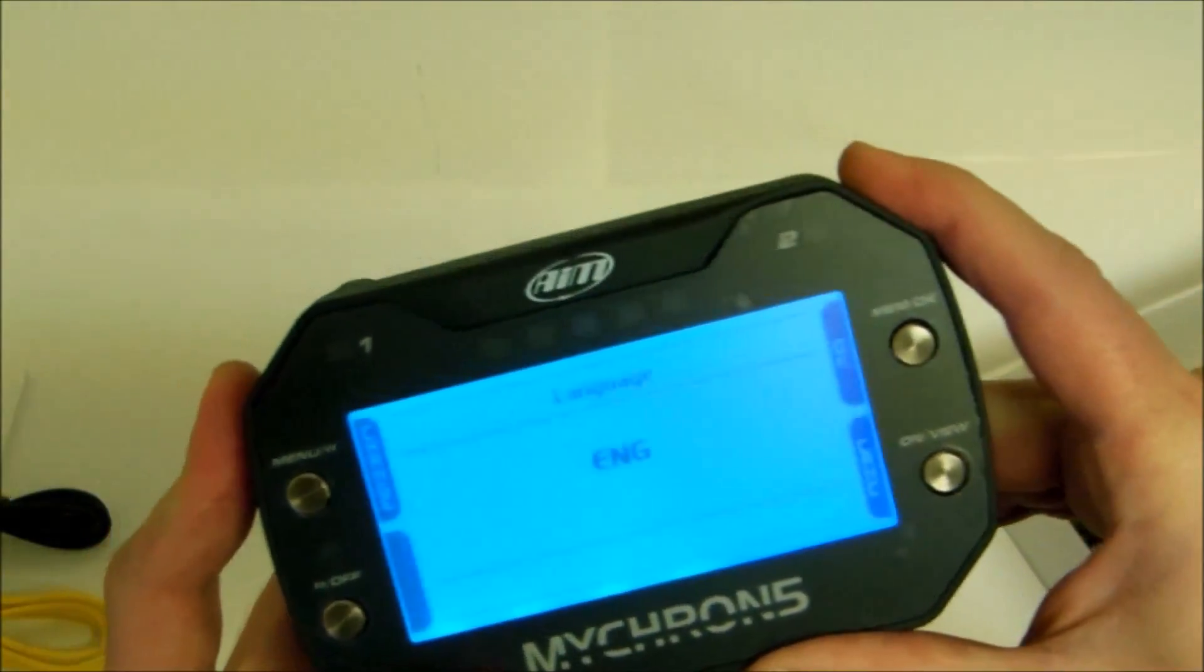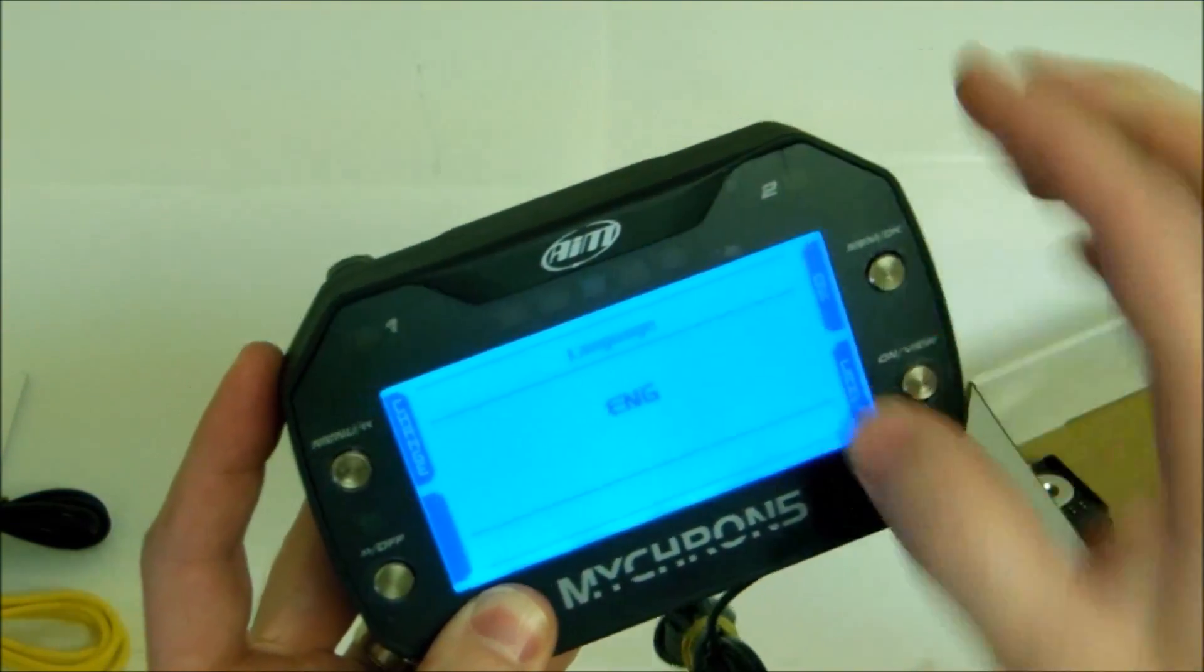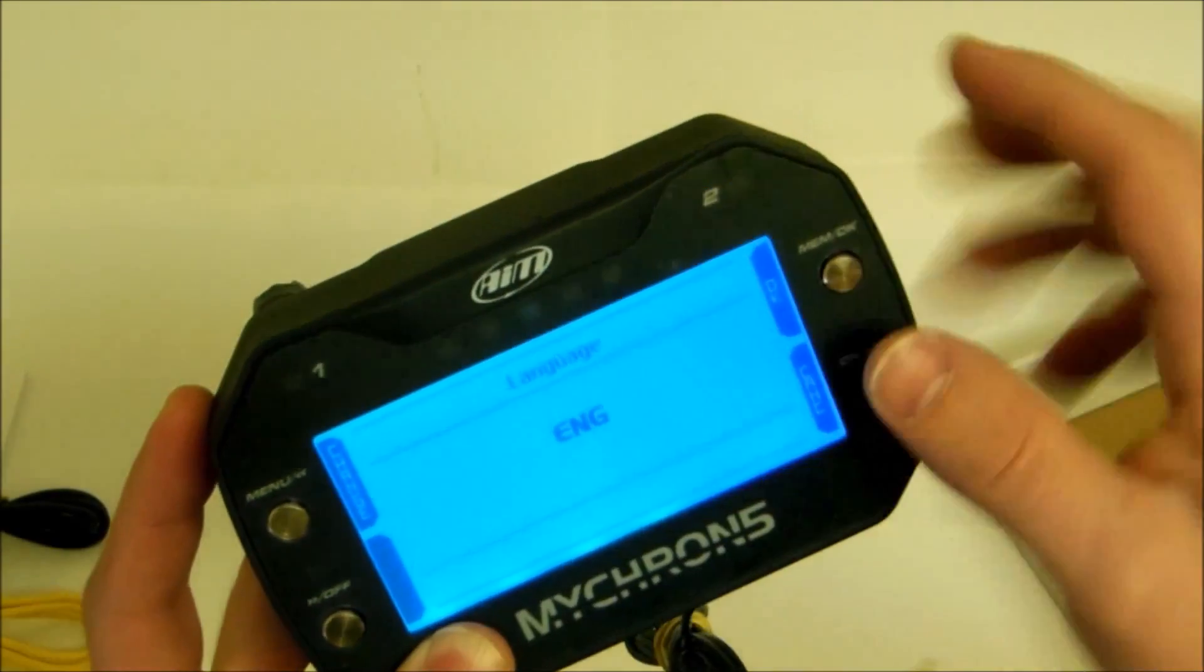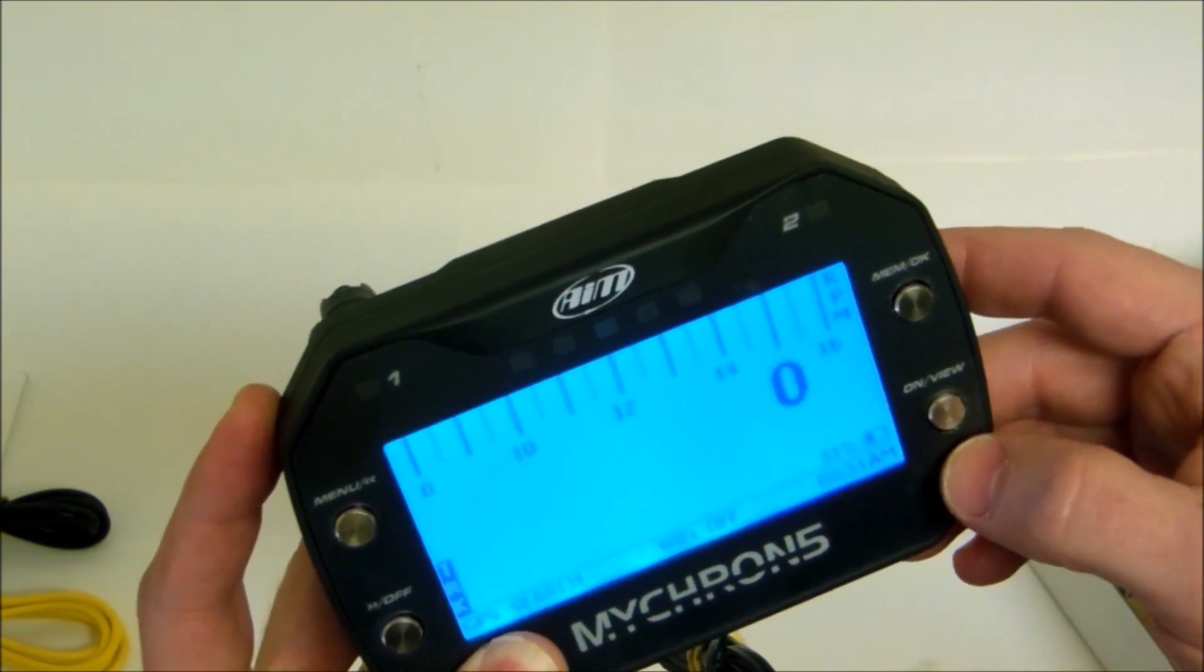Here is the device powered on. As you can see it has a nice clear screen. The backlit is a color blue. The on and off button and a couple of menu buttons to choose from.